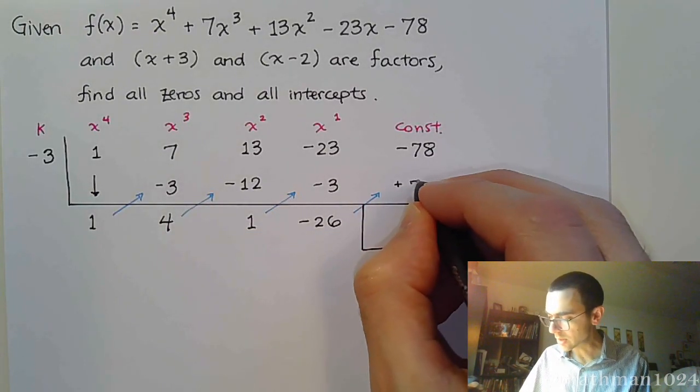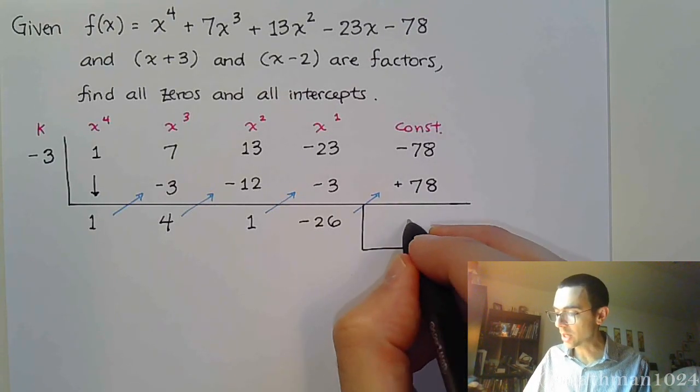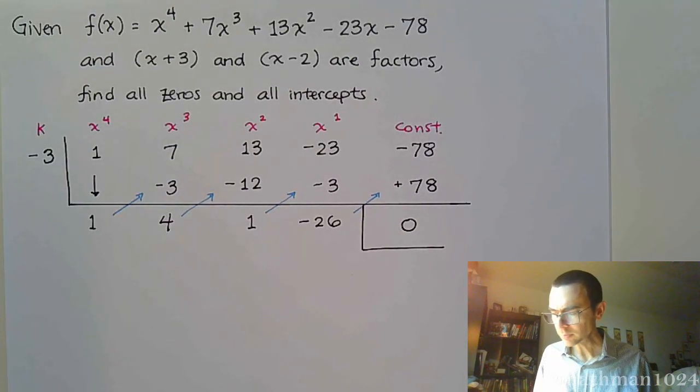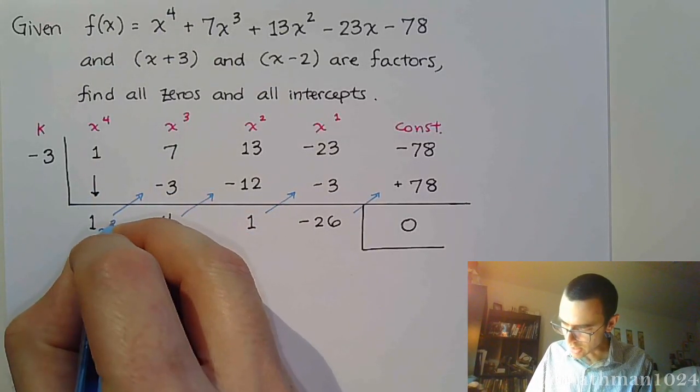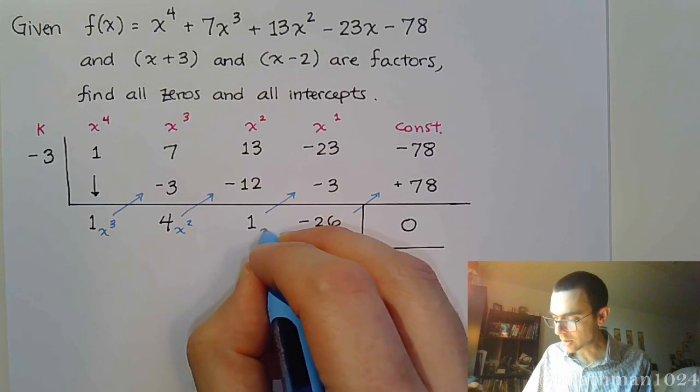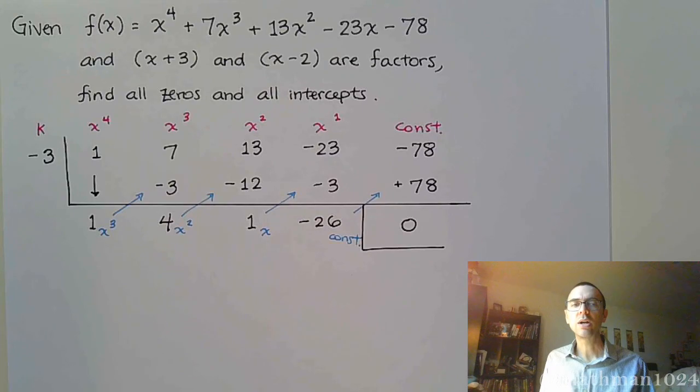And when you do negative times negative, you get a positive. And 3 times 26 is 78, which is really good news for us because now we get a remainder of 0, which again is what we're supposed to have. So, just so that we're all on the same page, we've gone from x to the 4th to now this is your coefficient for x to the 3rd, for x squared, for x, and your constant.